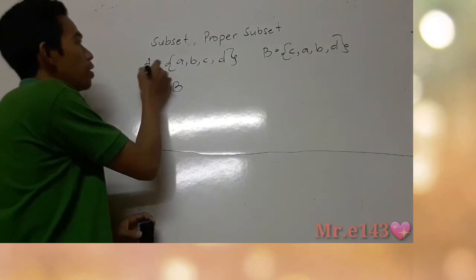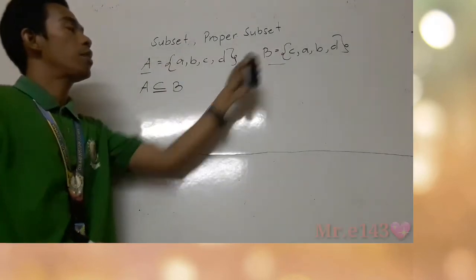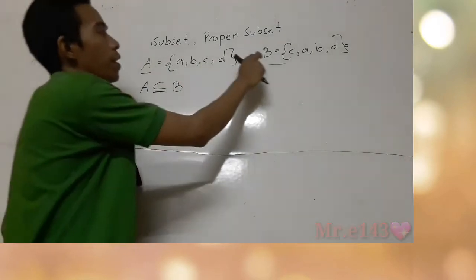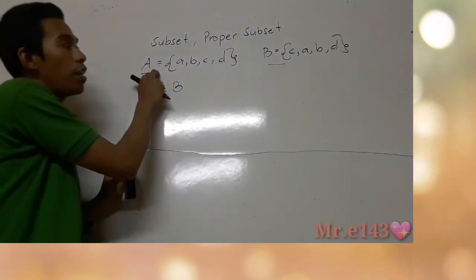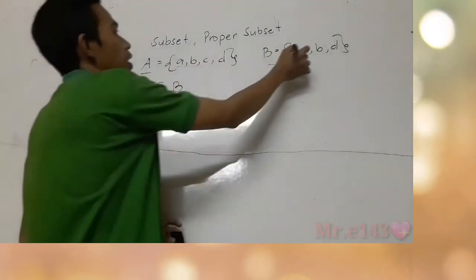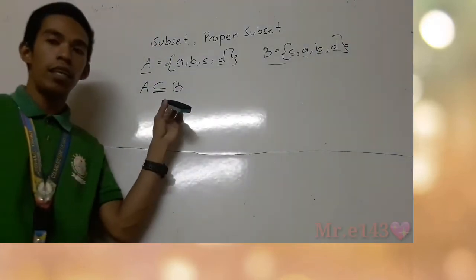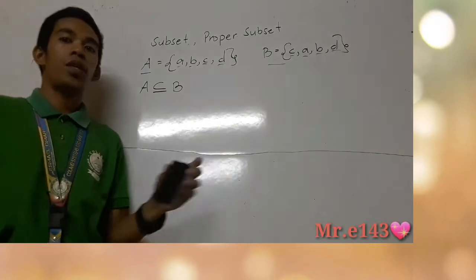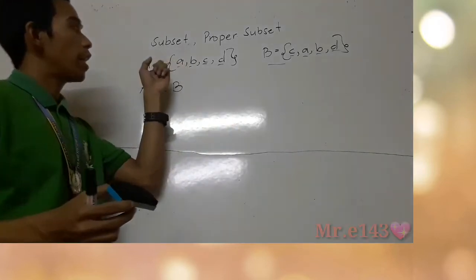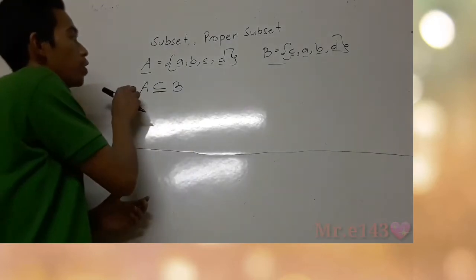For this example, we can say that A is a subset of B because, as we observe, every element of A is also an element of B — every element of A is also present in set B. We have: a, a; b, b; c, c; d, d. So we can say that A is a subset of B.